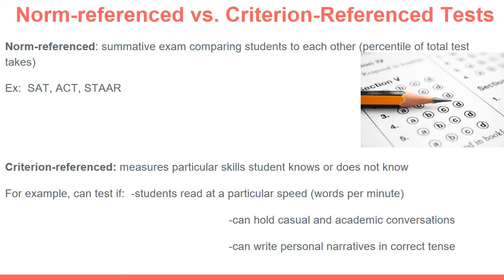Criterion reference tests measure particular skills to see if students know those skills or do not. For example, a test could measure the words per minute a student reads, whether a student can hold an academic conversation in complete sentences, or whether a student can write personal narratives in the correct tense. All of those are criterion reference tests — based on a particular skill. Students are not compared to others; it's more of a yes or no: can they do this activity or not.